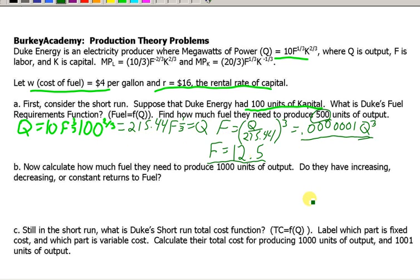Now, let's answer this second question here. What if we needed 1,000 units of output? How much fuel would we need? Well, let's plug 1,000 into this question here, and let's see how much fuel we need, and let's talk about whether they have increasing, decreasing, or constant returns to fuel.